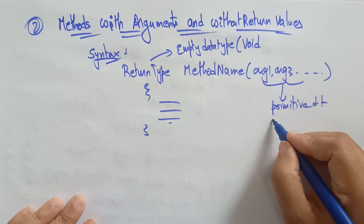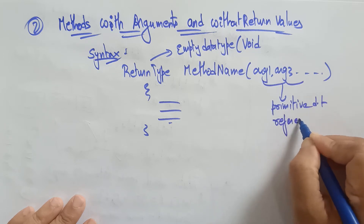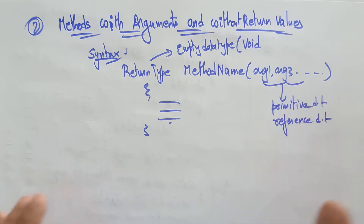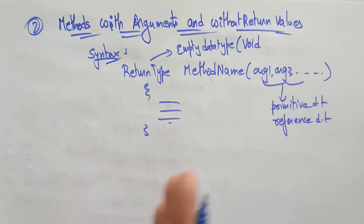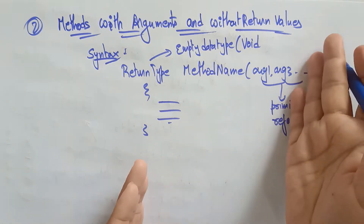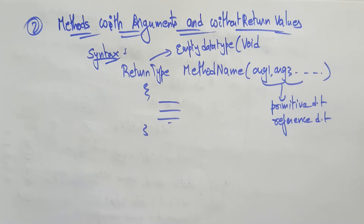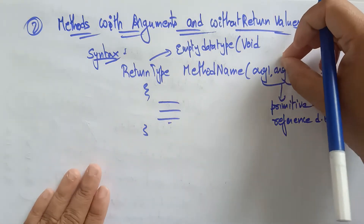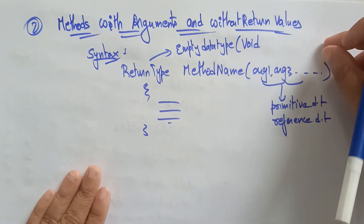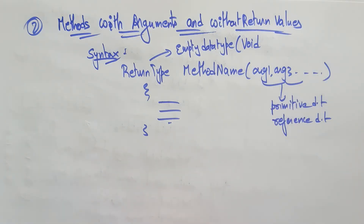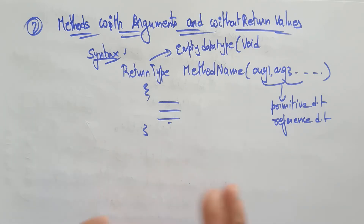In the previous video I explained about primitive and reference data types. For all methods you can use either primitive or reference based on the user requirement. How to access the reference data type and how to access the primitive data type — I already clarified that in the first method video, method with arguments and with return values. If you have any doubts, go and watch that video.